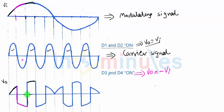In the next negative cycle, the things will repeat. D3 and D4 will be on this time, and VO is equal to minus VI. So you can see between these two points where VO is now, VO is